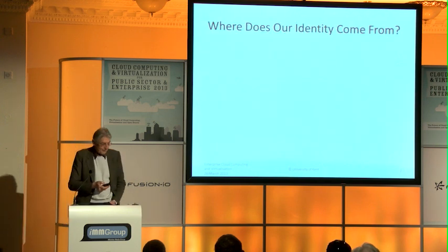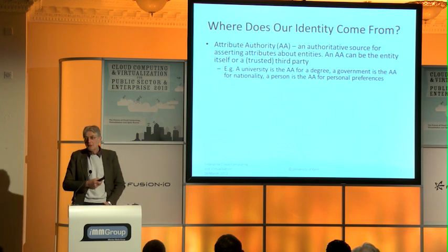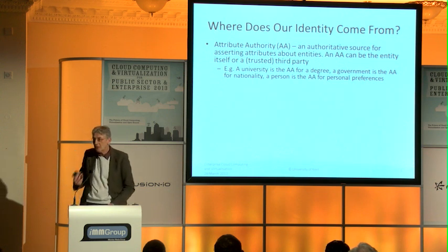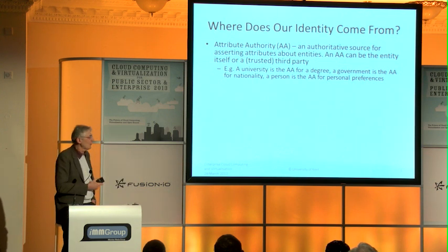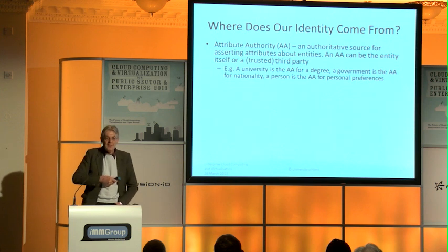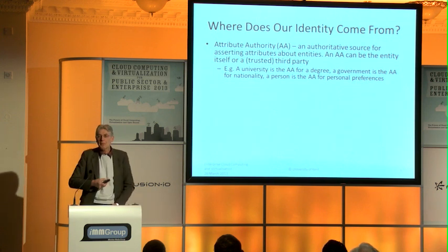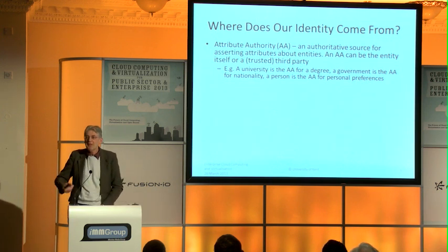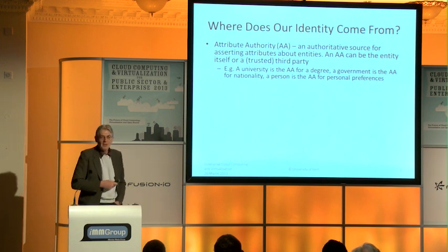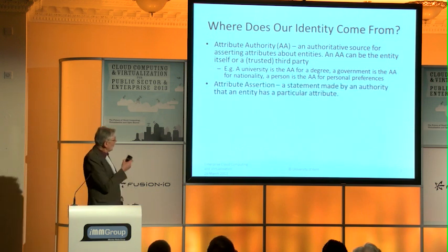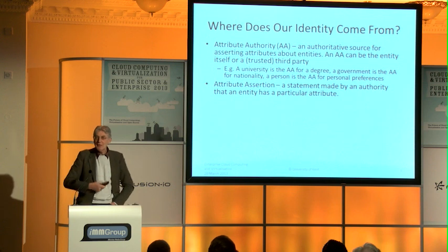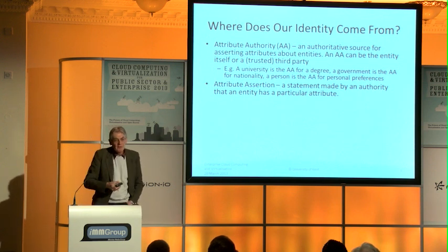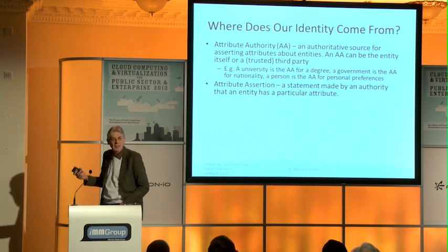Where does your identity come from? It actually comes from an authority that gives you the attribute. The authority might be yourself — you might assert your own attributes — but typically your attributes come from authorities who say what attributes you've got. In this environment we'll be talking about your employer. Your employer would be the authority that says which attributes you have: your role in the organization, which department you work for, and various things like that, which would then authorize you to use the cloud. After you've logged in to the identity provider, your authority makes an assertion to the cloud provider about your attributes.